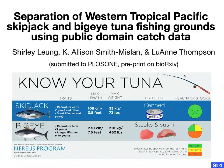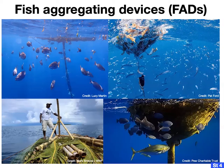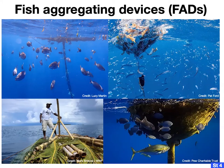Story number four is about the separation of skipjack and bigeye tuna using public domain catch data — submitted to PLOS ONE and pre-printed on bioRxiv. A lot of fishing in the tropical Pacific happens around fish aggregating devices, or FADs. These can be made out of pretty much anything and are objects placed in the water to collect algae, which attracts things that eat algae, and so on up the food chain until you have swarms of tuna hanging out at your FAD. This can be really efficient, but because FADs tend to gather many different species together, you may also be capturing species you don't want or shouldn't be catching legally.